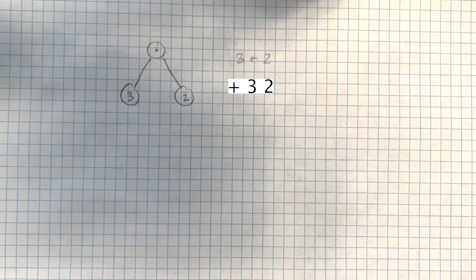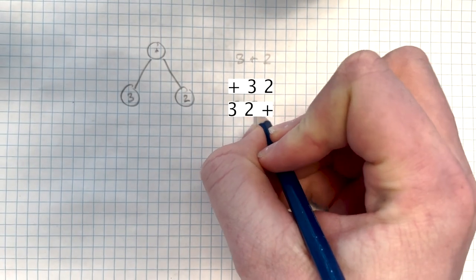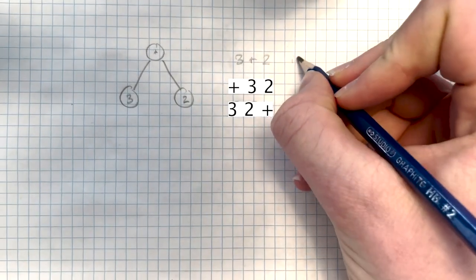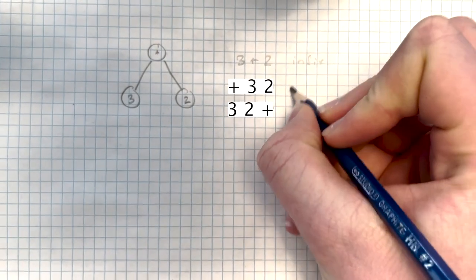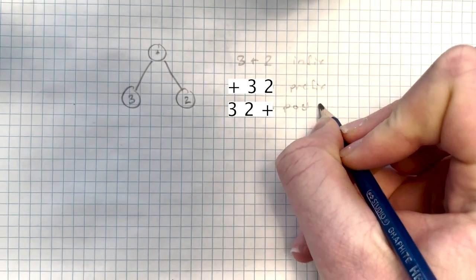In postfix, it is read children left to right, then root node. 3, 2, plus. So these are the same expression written in infix, prefix, and postfix.